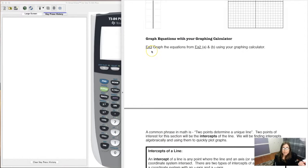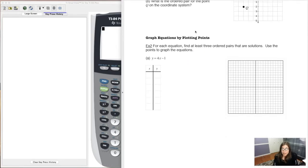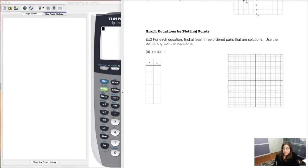So the directions for example 3 say graph the equations from examples 2a and b using your graphing calculator. Let me scroll up to 2a so we can remember what that equation was. We graphed this by hand, right?